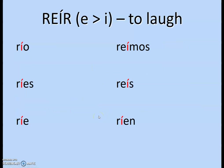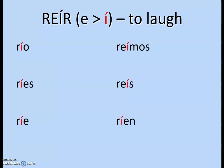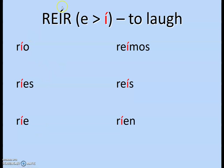The last one to look at is reír, which has an accented I. When you stem change reír, it's E to accented Í. The same applies to sonreír. So it's just E to I with an accent. And of course, in the nosotros form, it keeps its original stem form.